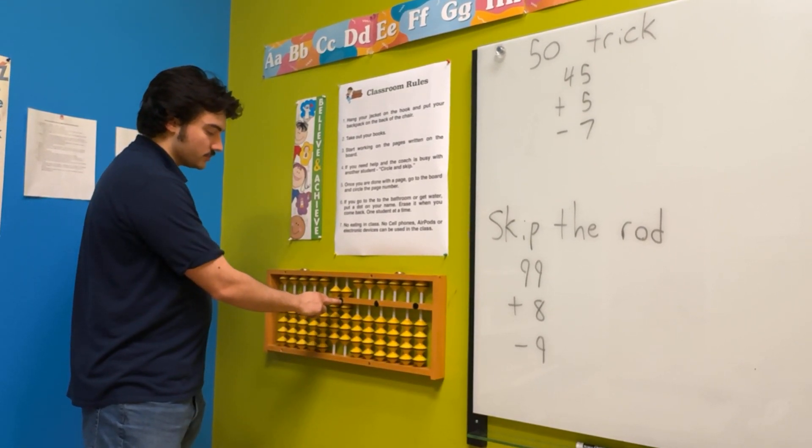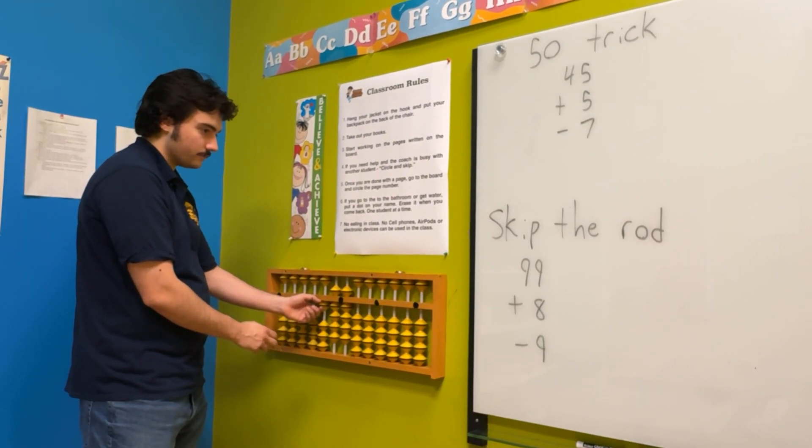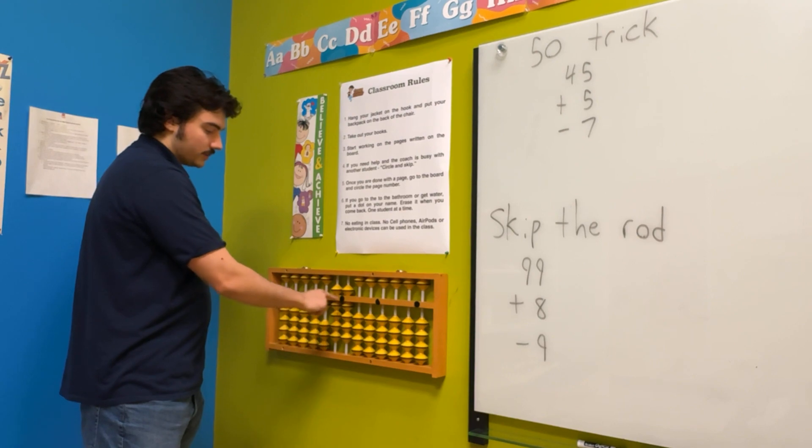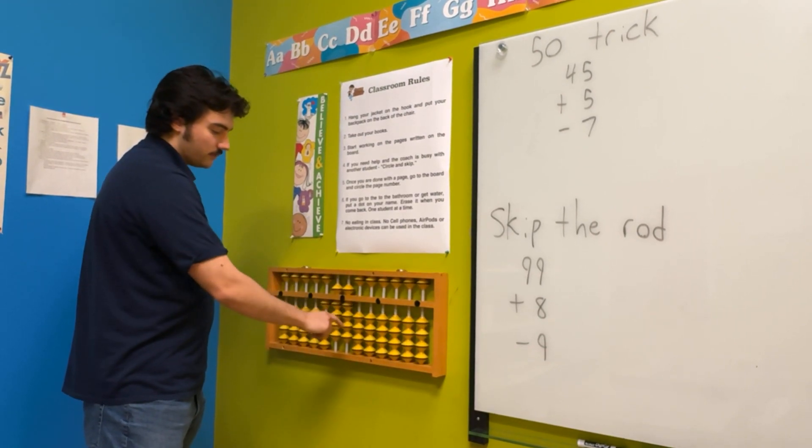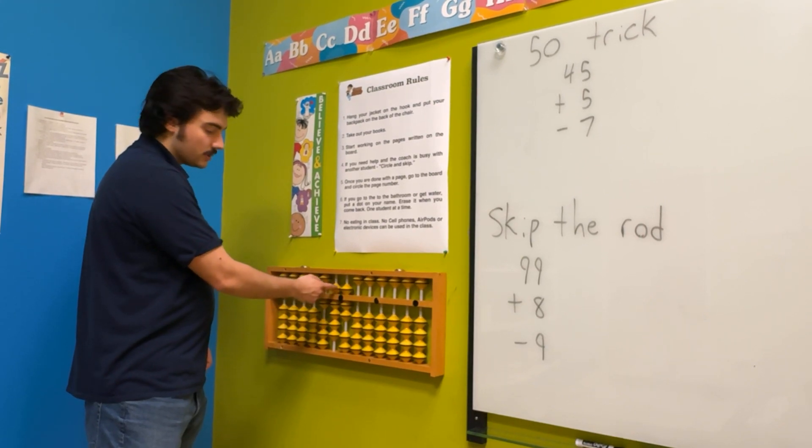So what you want to do is skip the rod, go to the next one, add a hundred here, and then skip the rod again. Take away the big buddy of eight, which is two. Then you go back to the rod we skipped and put everything away.